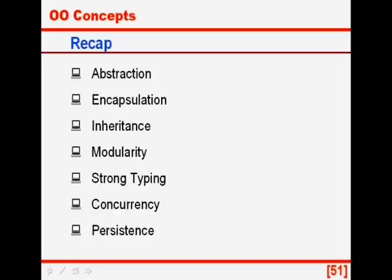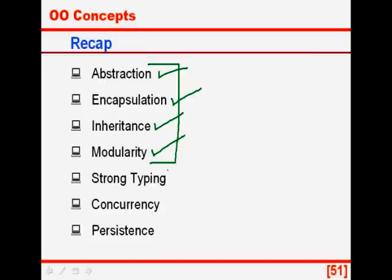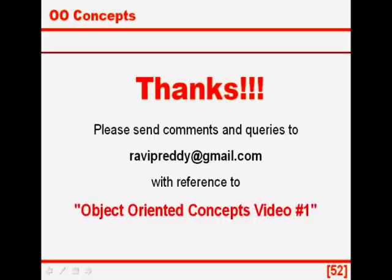To recap, let us look at the four major features of object oriented programming: abstraction or modeling, encapsulation or implementation hiding, inheritance which could be single or multiple, and modularity. The other three features also very important in the modern context are strong typing, support for concurrency, and a mechanism to persist the state of objects across time. Thanks for your patience in going through this video on object oriented concepts.